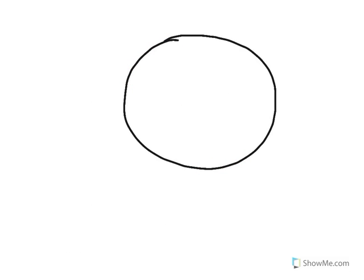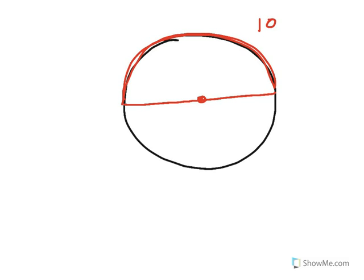We have a special name for when a chord goes through the center — it's called a diameter. When the central angle is formed by a diameter, it creates an arc with a measure of exactly 180 degrees. That kind of arc is called a semicircle, so a semicircle is the name for a 180-degree arc.